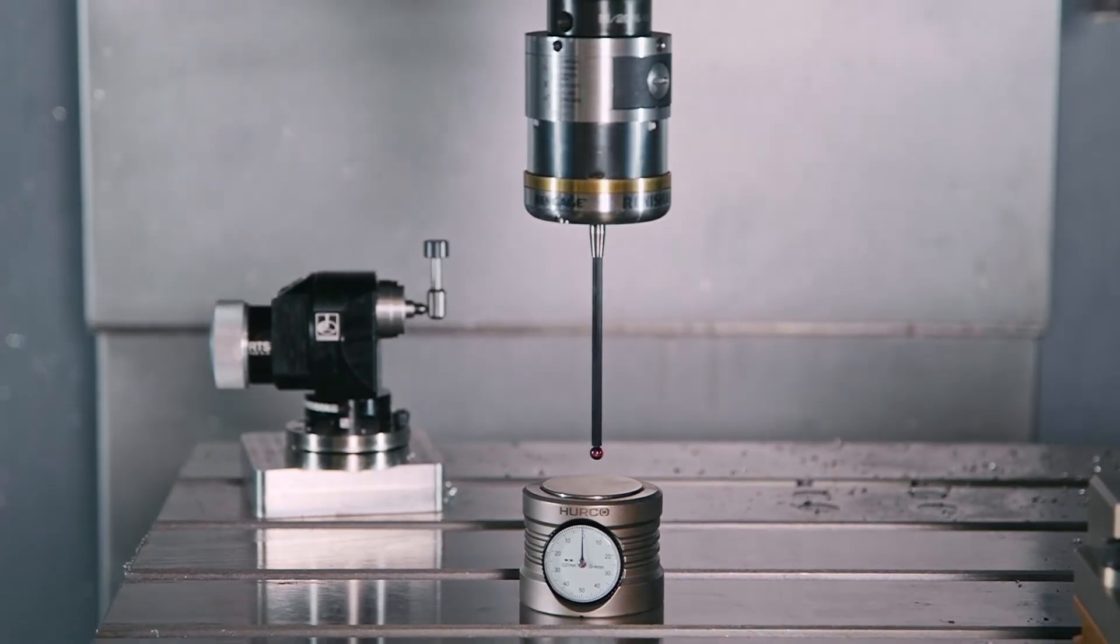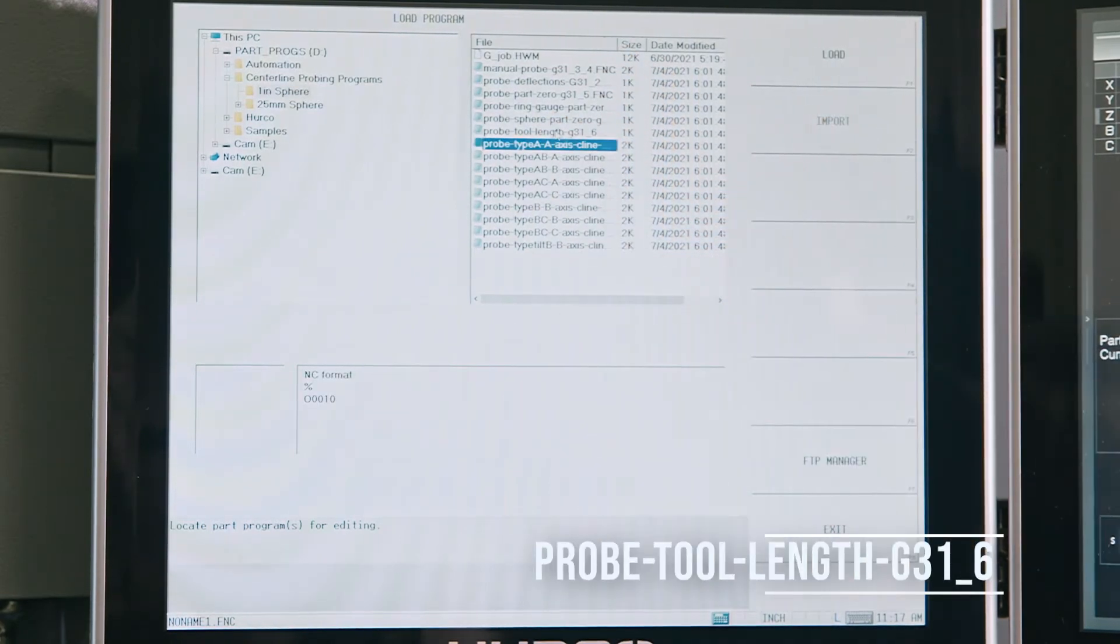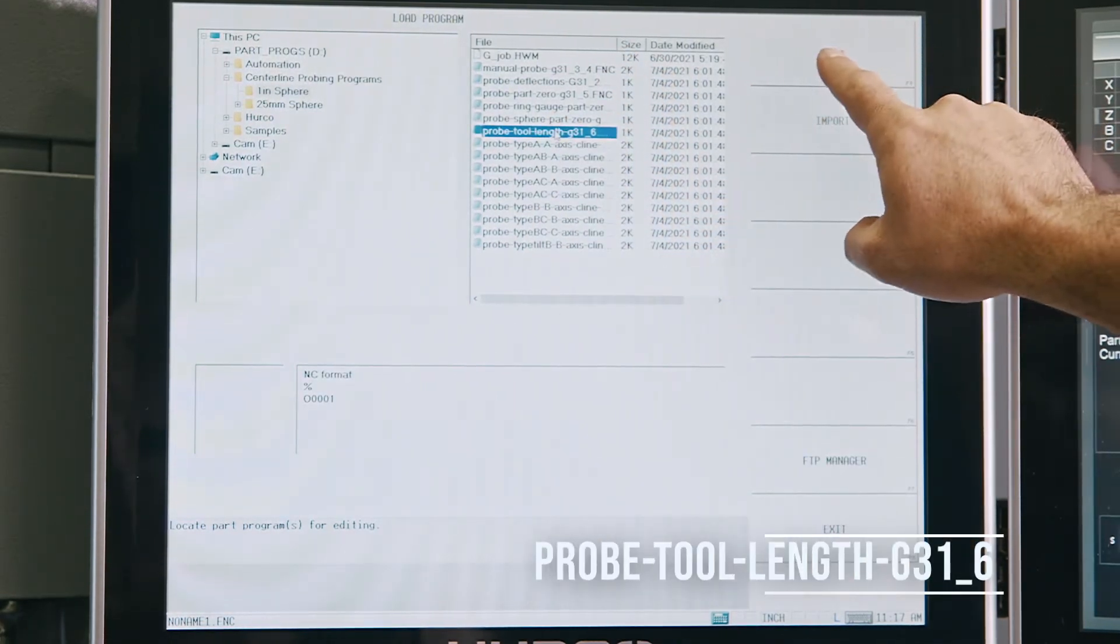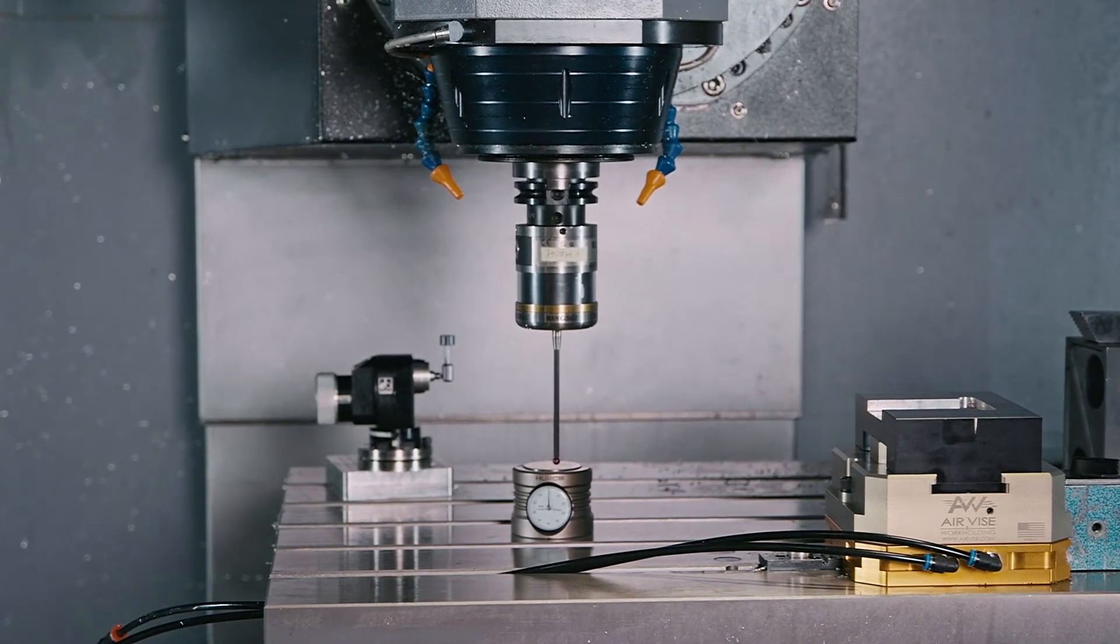Jog the probe within a quarter inch of the toolsetter and load program probe tool length G31-6. Make sure to probe the ground surface, not the movable plunger.